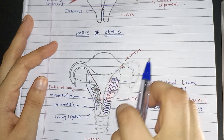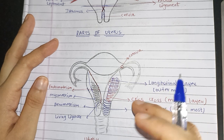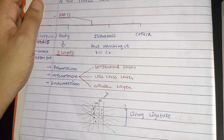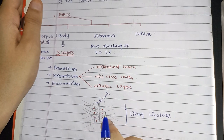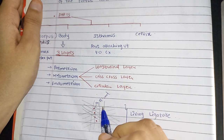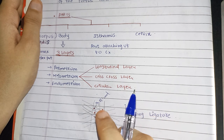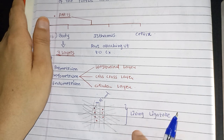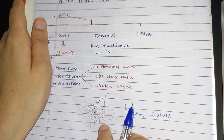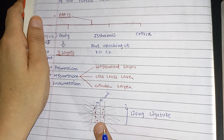These fibers — all three — interlace with each other in a manner called living ligature. I'll show you how they are interlacing: the longitudinal, circular, and criss-cross layers interlace with each other, and in between there are blood vessels. This pattern of interlacing fibers is known as living ligature, and these muscles in the myometrium arrange themselves in a pattern of ligature.